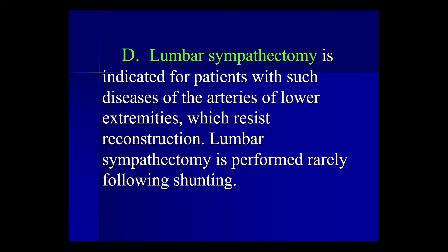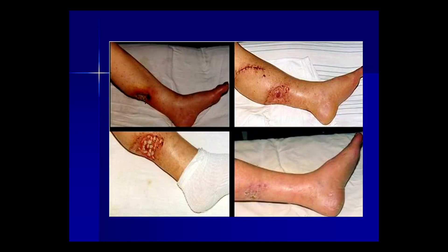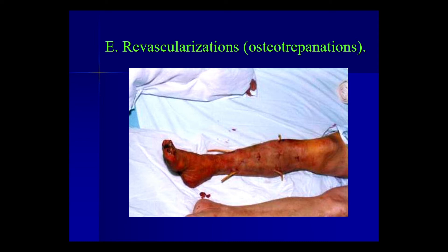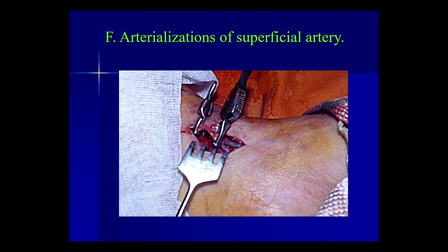Lumbar sympathectomy is indicated for patients with disease of the arteries of the lower extremities which resists reconstruction; it is performed rarely, following shunting. Pictures show trophic ulcers and the postoperative period after skin plasty of these ulcers. Other procedures shown include osseous trepanation and arterialization of the superficial artery.